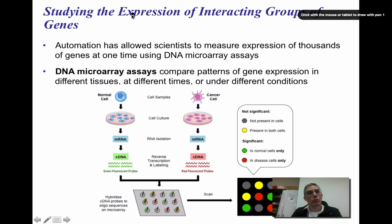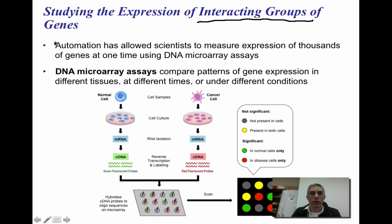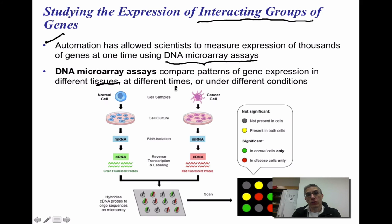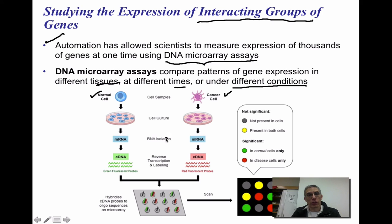Sometimes we need to study the expression of interacting groups of genes. A lot of what we're talking about now has been automated, which has allowed scientists to measure the expression of thousands and thousands of genes at one time. One method of doing that is something called a DNA microarray assay. This is going to be used to compare the patterns of gene expression in different tissues at different times, or even tissues that are under different conditions. A good example of this would be comparing a normal cell with a cancer cell.